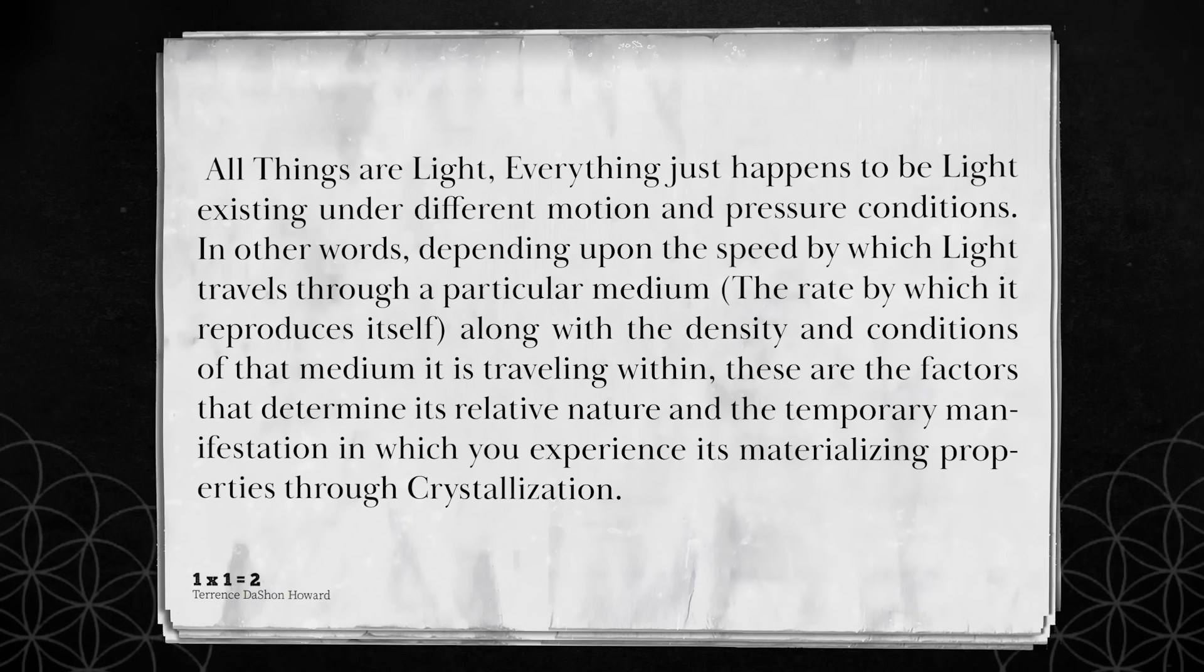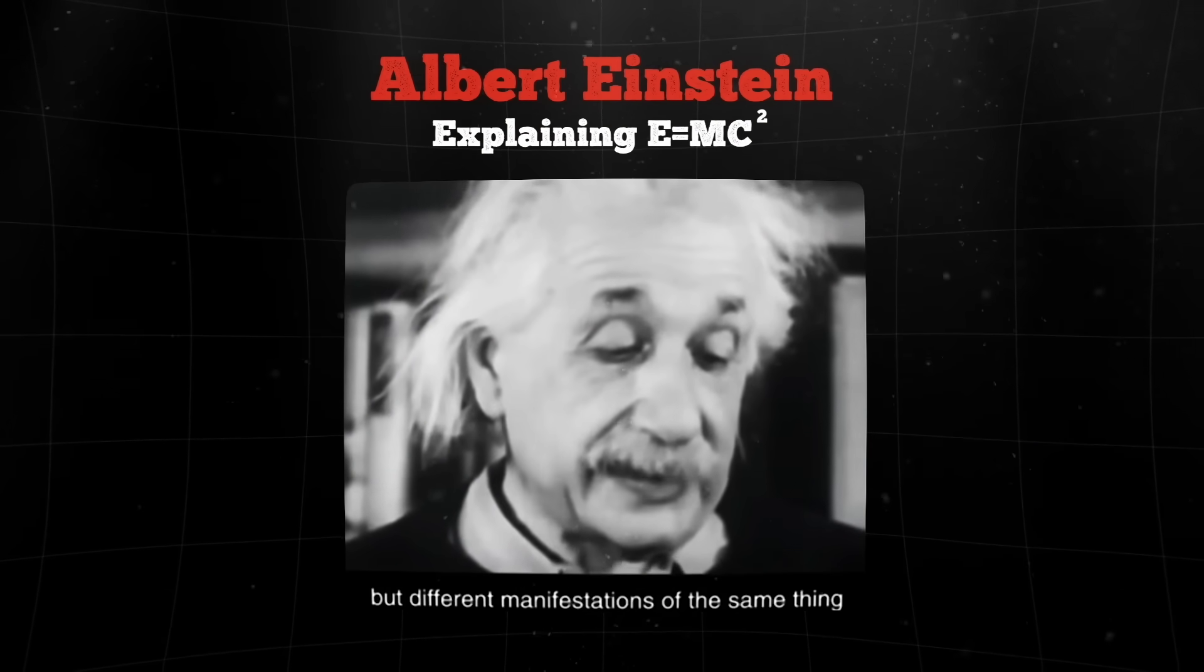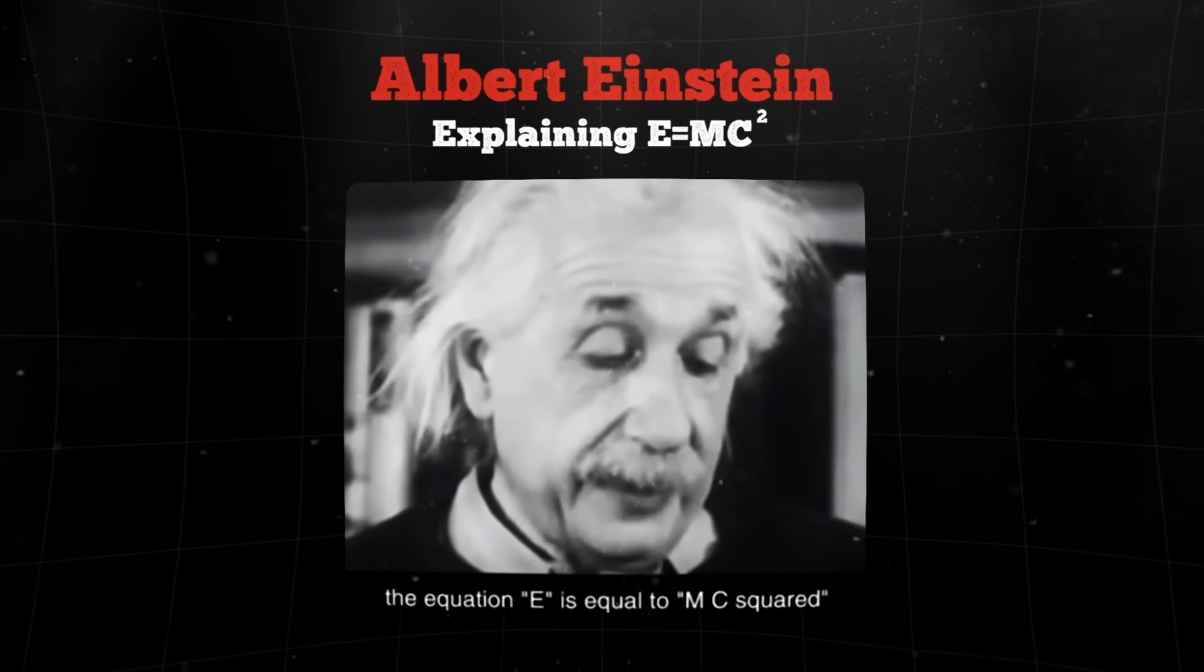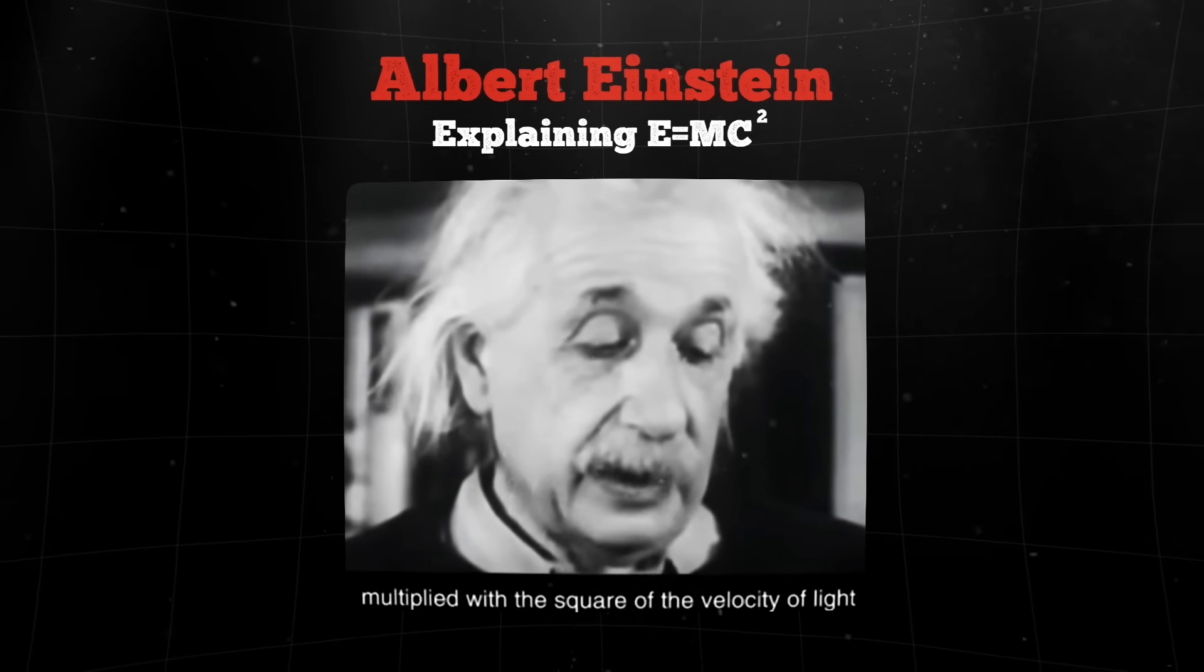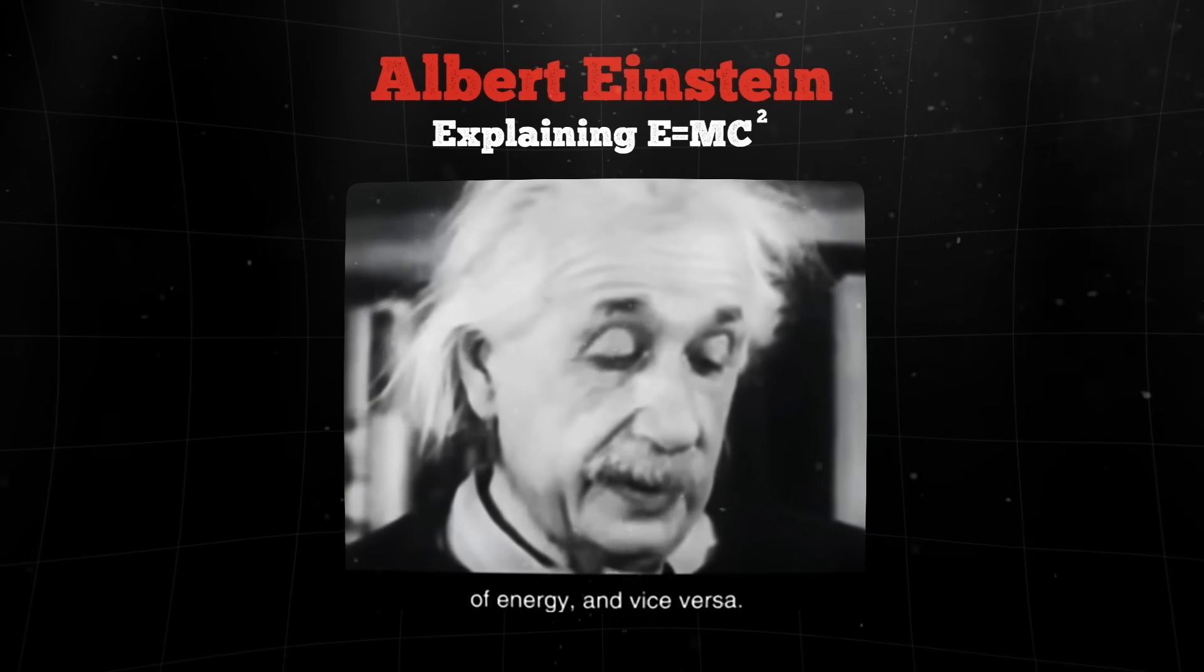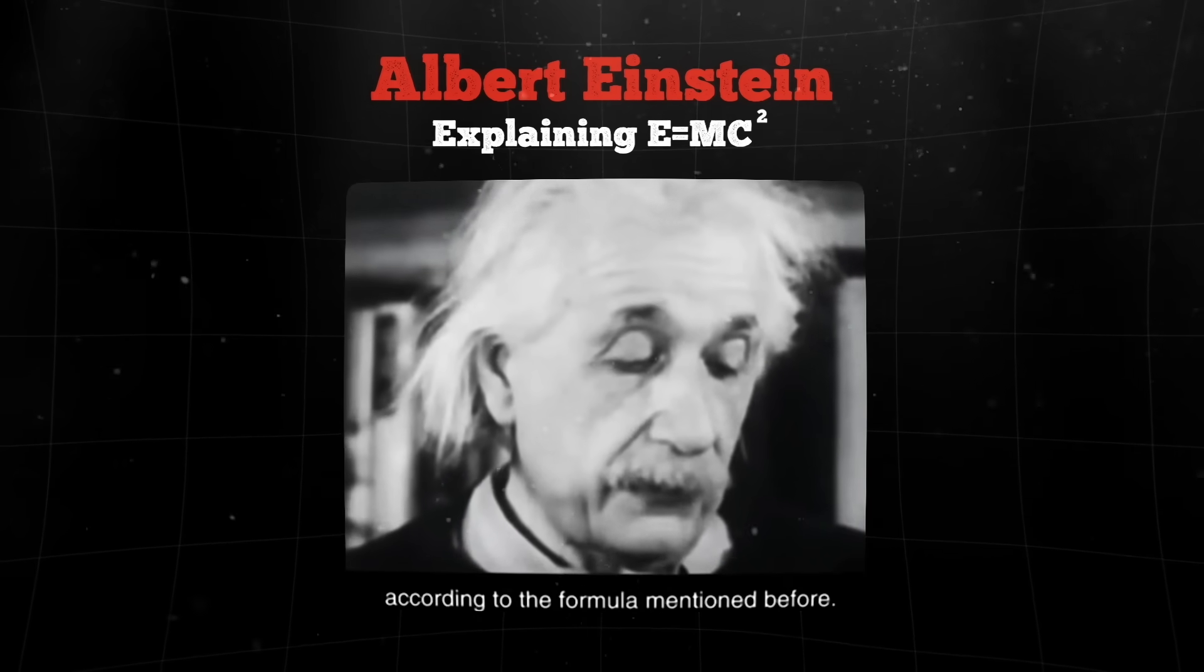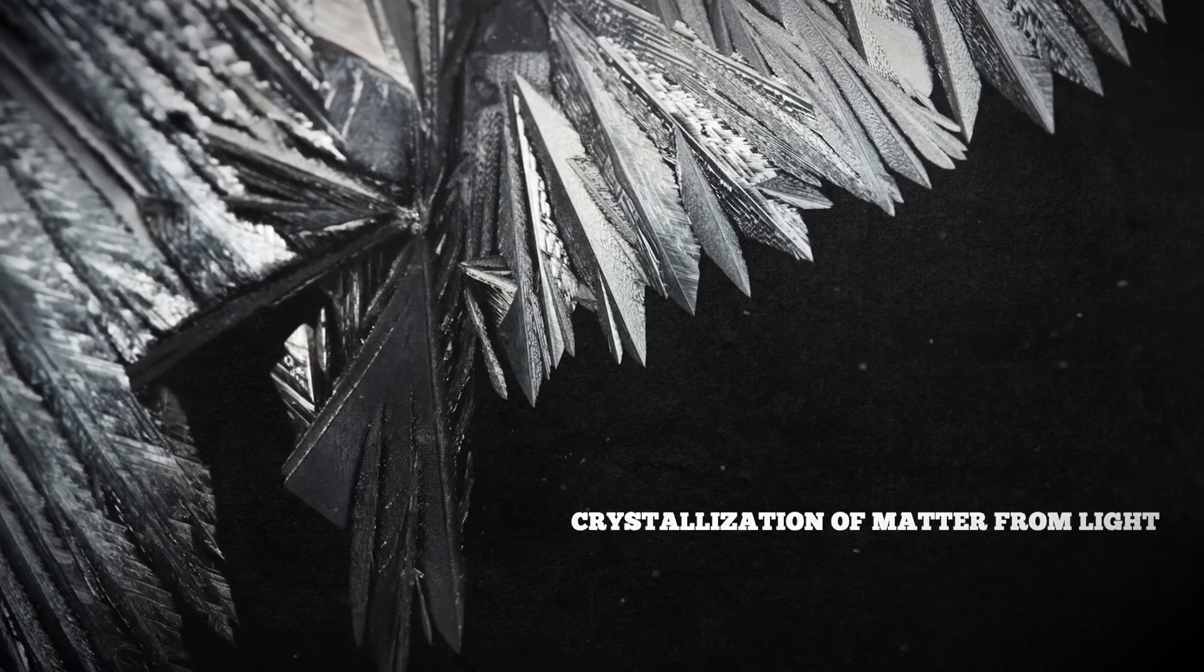Everything just happens to be light, existing under different motion and pressure conditions. Mass and energy are very different manifestations of the same thing. Furthermore, the equation E equals MC squared, in which energy is equal to mass multiplied with the square of the velocity of light, showed that a very small amount of mass may be converted into a very large amount of energy, and vice versa. The mass and energy were in fact equivalent. This was demonstrated by Cockcroft and Walton in 1932 experimentally.